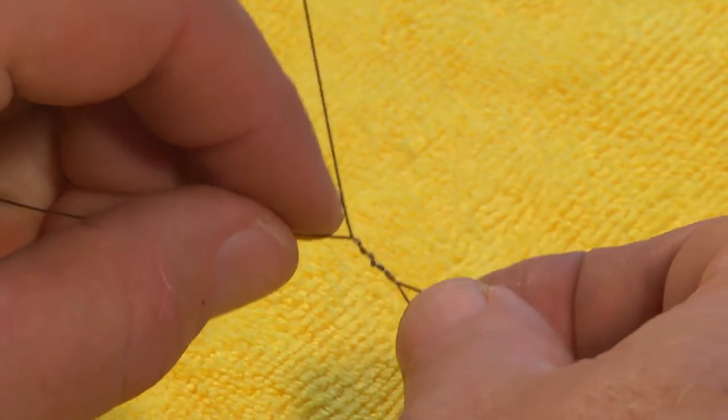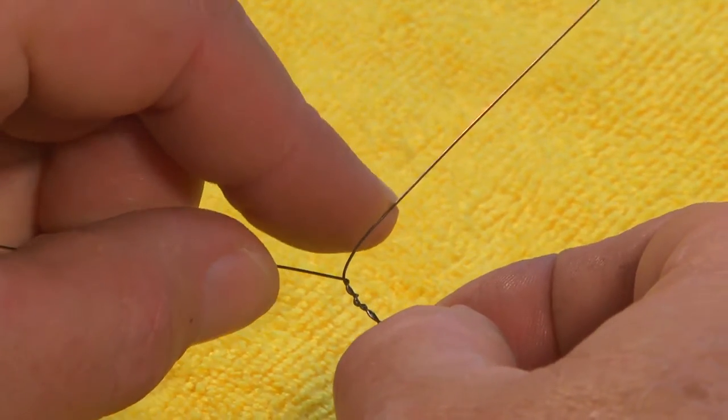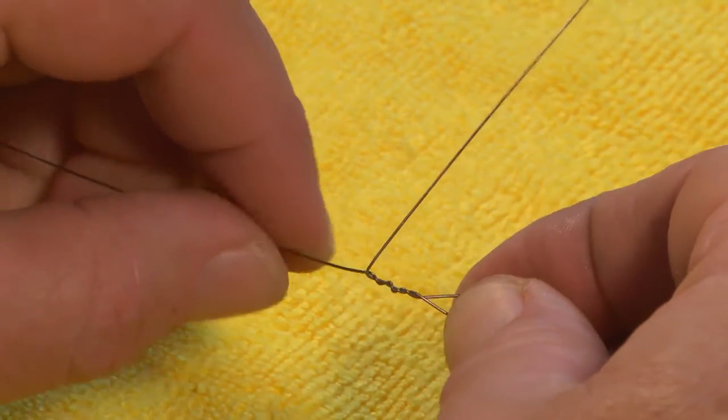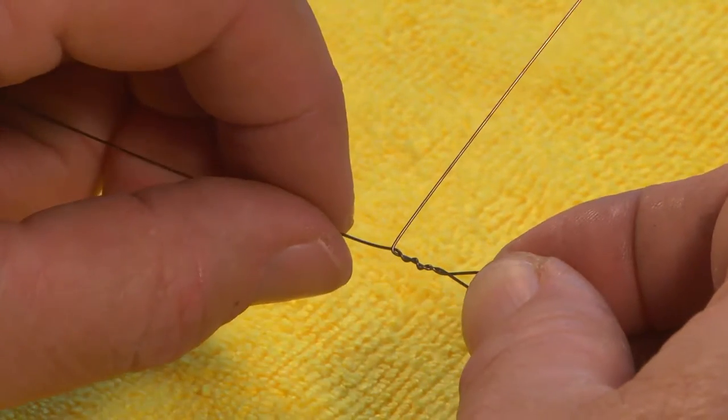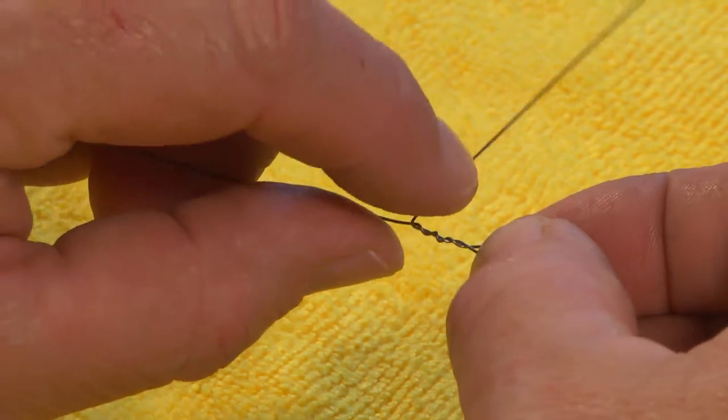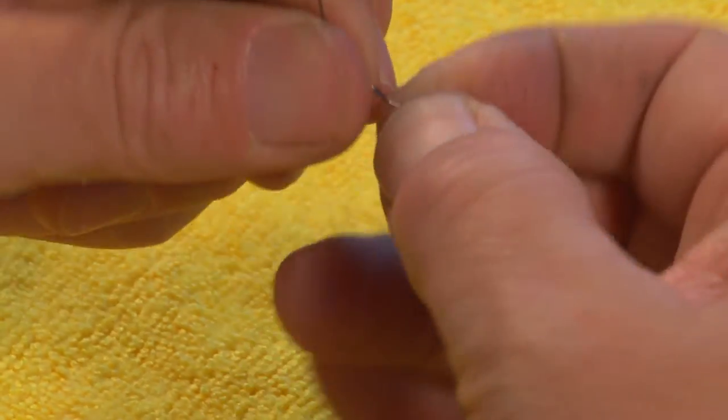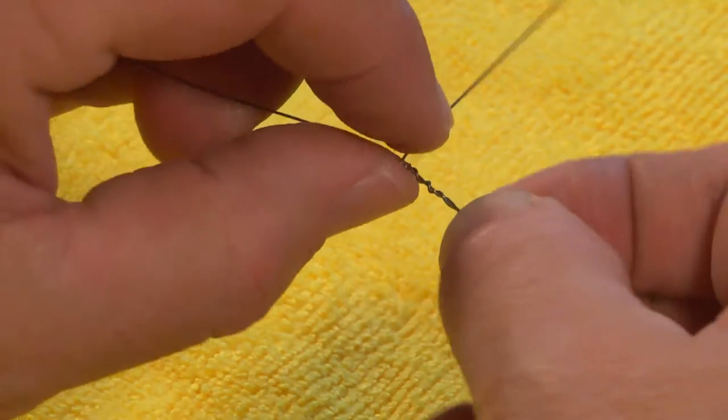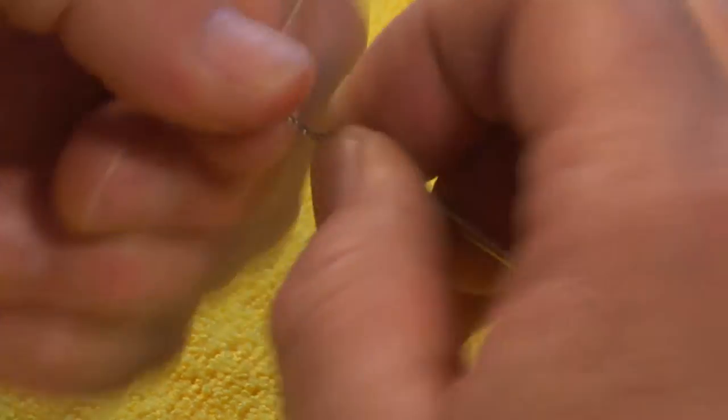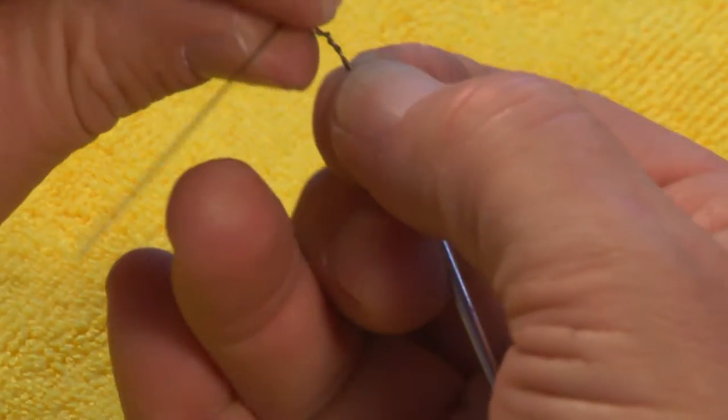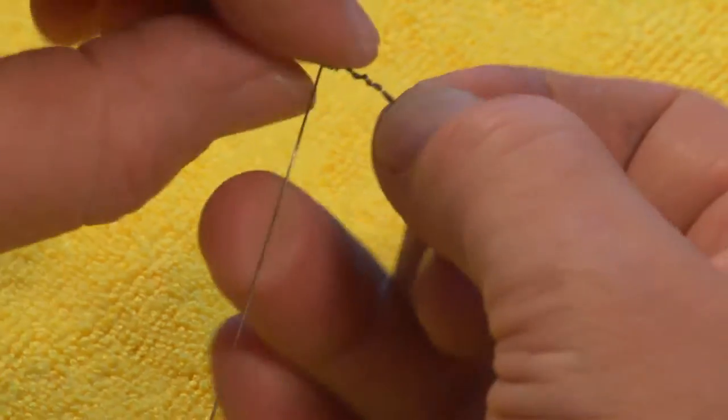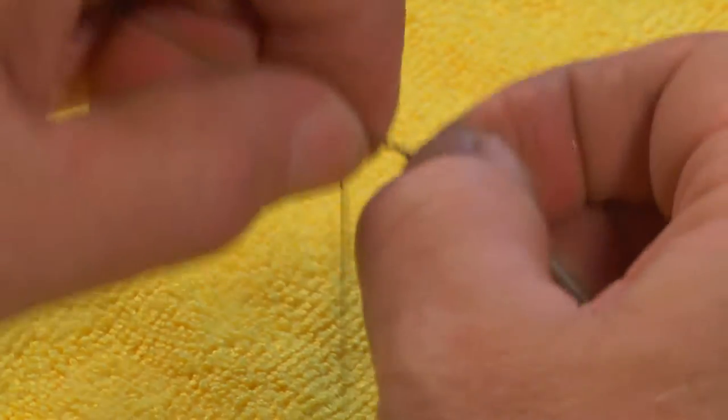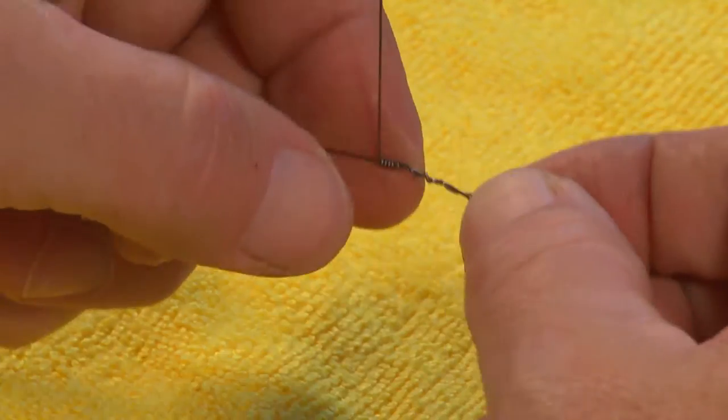you're going to take your tag end here and bend it perpendicular to the standing part of the line, or the wire, and start your barrel wraps. Just run those around the standing part as close together as possible, but not on top of each other. And about five barrel wraps should get it done. There we go.